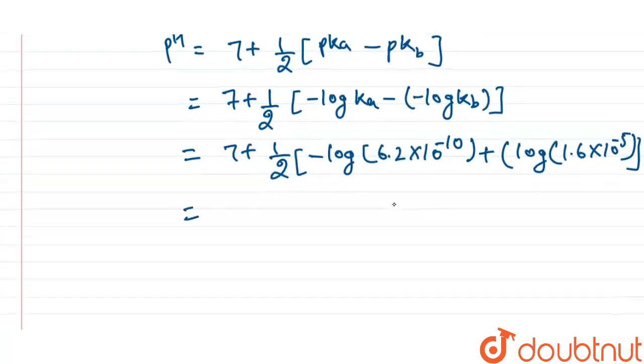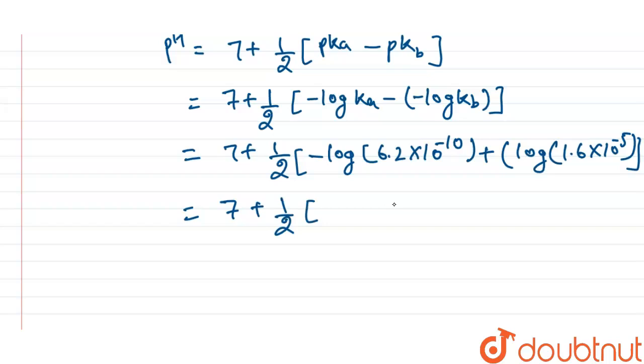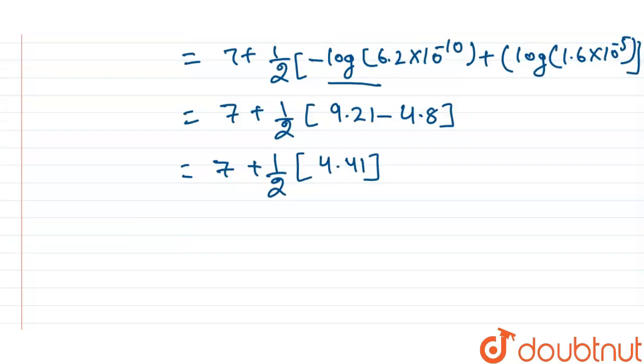Now it is equal to 7 plus half. This value gives 9.21 and this value gives minus 4.8. So now we get 7 plus half. This value gives 4.41, and by calculating this value, we get pH of this salt will be equal to 9.21.